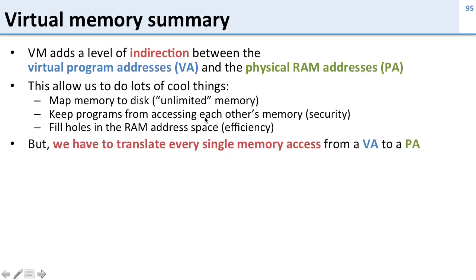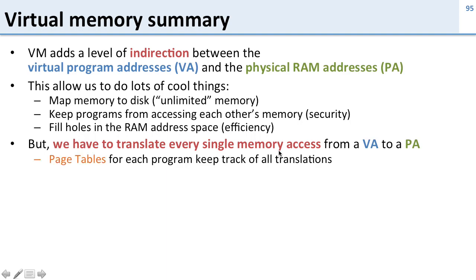However, the trade-off is that we have to translate every single memory access. All of our programs give us virtual addresses, and we have to translate them to physical addresses. We have 1.33 memory accesses for every instruction, which means we need to be able to do this really fast without hurting performance.